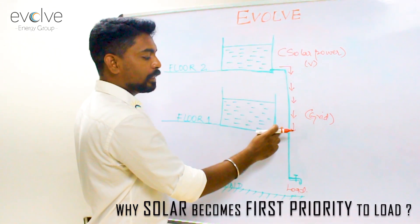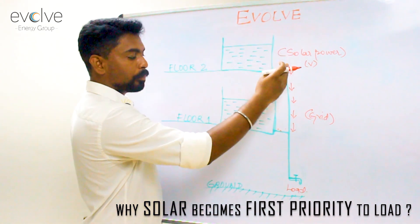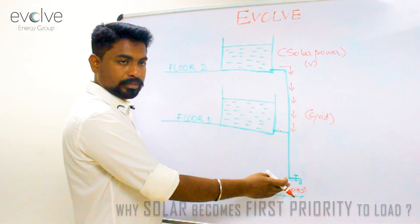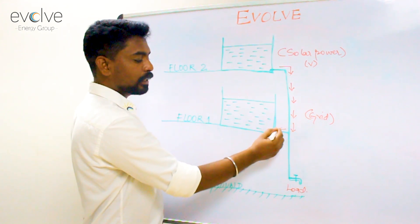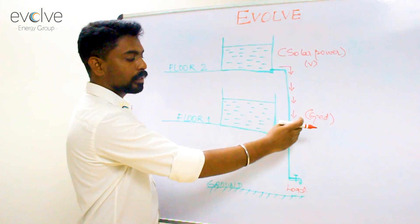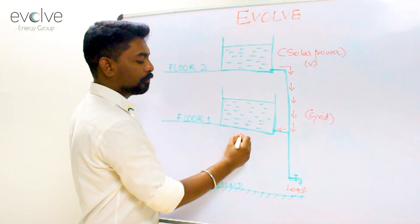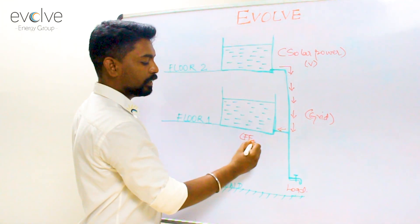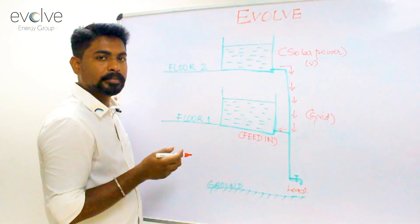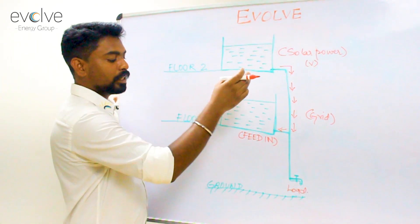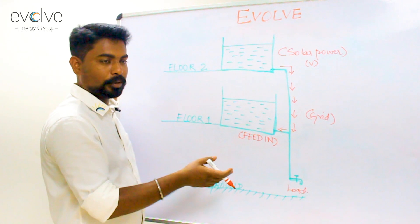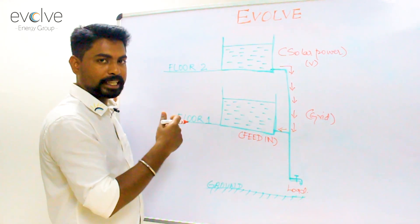So, whenever there is a load, the solar power tries to feed the load first and if there is no load and no load condition happens, the solar power tends to flow itself into the grid which we call it as a feed-in. And this is why solar becomes the first priority to the load pushing the grid to the second.